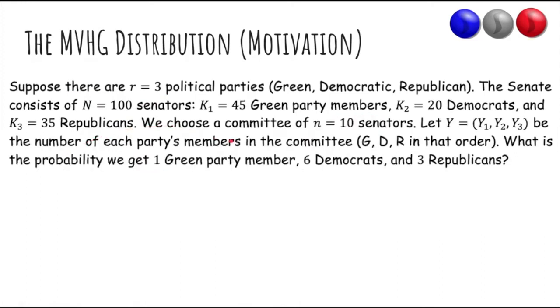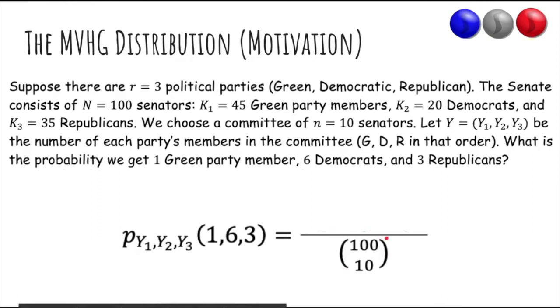You want to choose a committee of 10 senators. So let's let Y be the number of each party's members in the committee. So what's the probability that in the committee we have one Green Party member, six Democrats, and three Republicans? Well, there's 100 choose 10 total committees because there's 100 senators and you need to choose 10 to be in the committee.